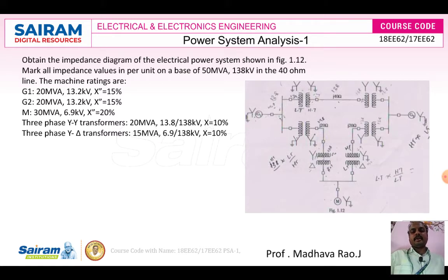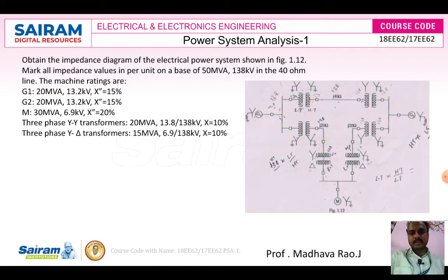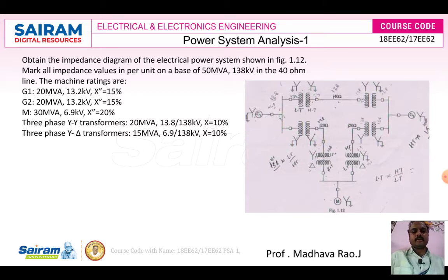In that figure, if you observe, there is a 40-ohm line and a 20-ohm line. The 40-ohm line voltage is 138 kV. Generator 1 rating is 20 MVA, voltage rating 13.2 kV, reactance 15%. Generator 2 also has the same rating: 20 MVA, 13.2 kV, reactance 15%. We need to convert to per unit value: 0.15.